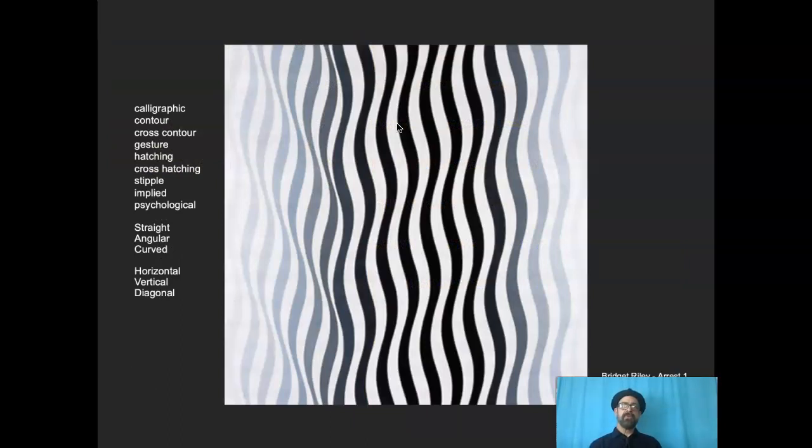Bridget Riley, what's going on here? Pause it and think about all the things that apply. They're calligraphic. They change width along the length of the lines. They're following contours. It's cross contour, even more so. And there are implied lines here. Do you see the way each one of these kind of undulating waves across the top of those waves is an implied line? And we've got vertical and diagonal working as well.